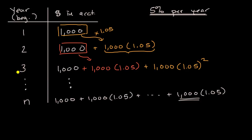So when we're talking about the beginning of year n, you go up to the exponent that is one less than that. And so this is going to be to the n minus one power.